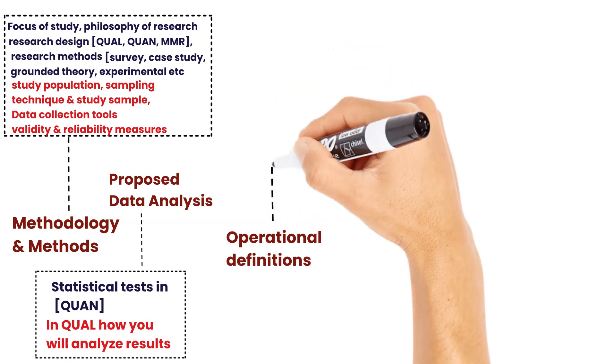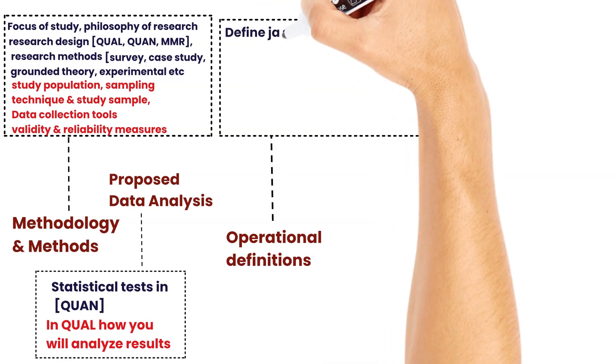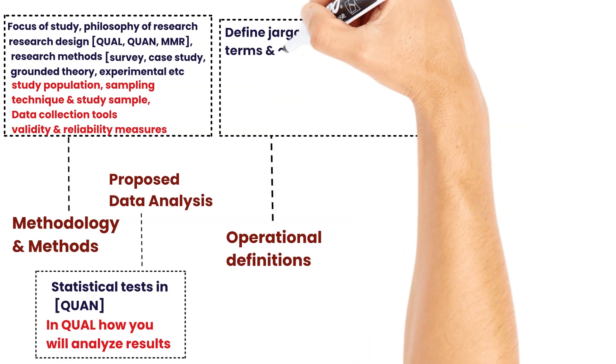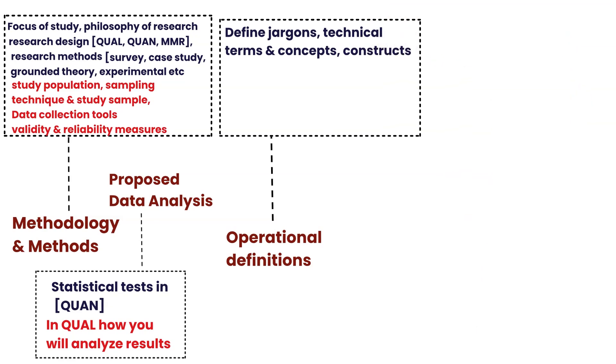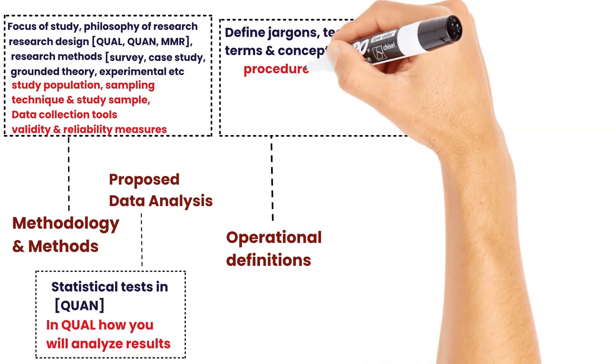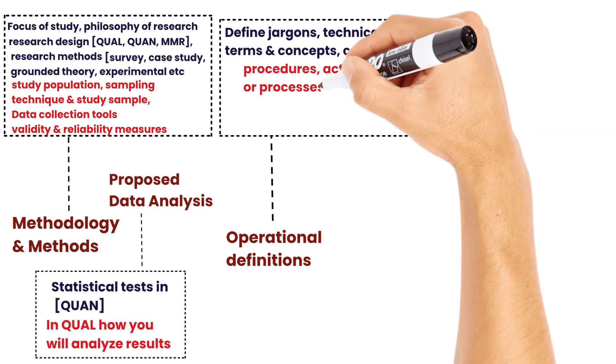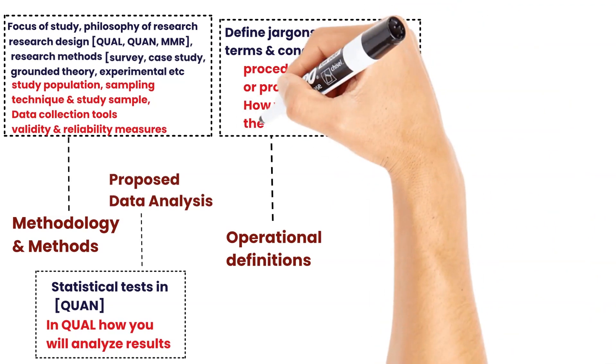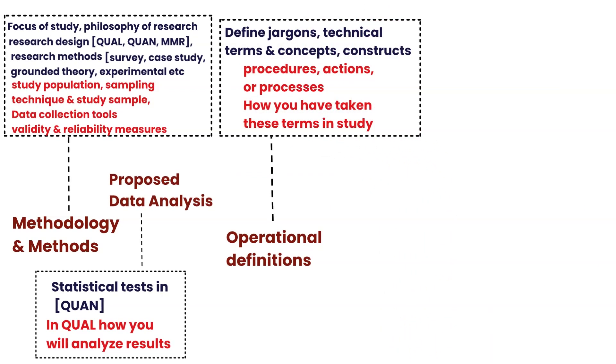Operational definitions. In this section, define all the jargons, technical terms and concepts and constructs used by your study. It is description of something in terms of your study, operations, procedures, actions or processes that how you have taken these terms in your study.